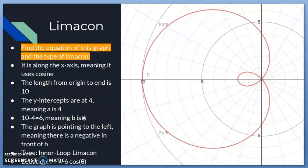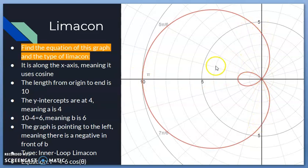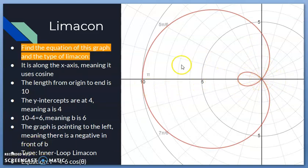Now we find the equation of a given limaçon graph. It's reflective along the x-axis, so it uses cosine. The length from origin to end is 10, and the y-intercepts are at 4, so a = 4. Then 10 − 4 = 6, so b = 6. The graph points left, so there's a negative in front of b. This is an inner loop limaçon with equation r = 4 − 6·cosθ.